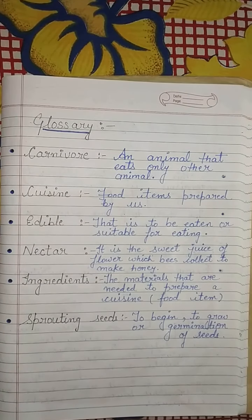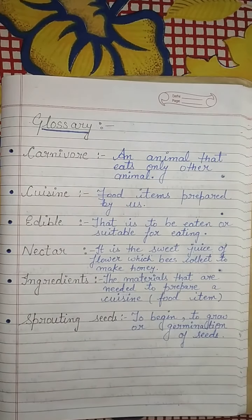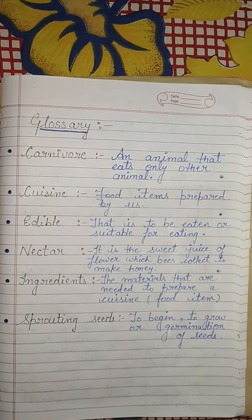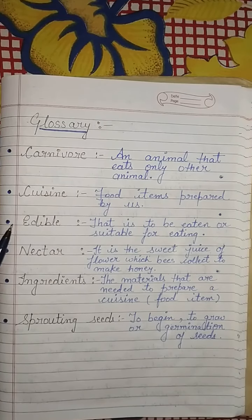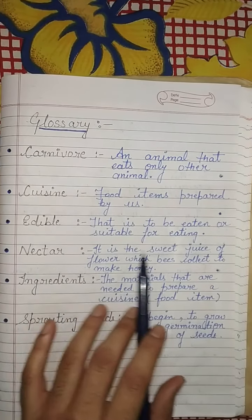At the last of this chapter, we will discuss some key terms in the form of a glossary. Our first term is carnivore — an animal that eats only other animals. Our second term is cuisine — food items that we prepare. Third is edible — something that is to be eaten or suitable for eating.